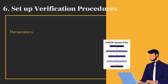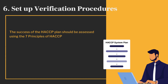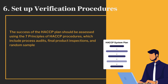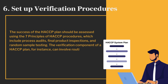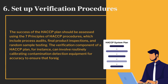The success of the HACCP plan should be assessed using verification procedures, which include process audits, final product inspections, and random sample testing. The verification component of a HACCP plan, for instance, can involve routinely calibrating contamination detection equipment for accuracy to ensure that foreign bodies are reliably identified and rejected.